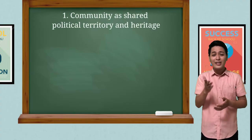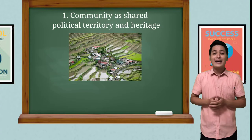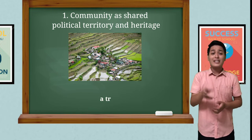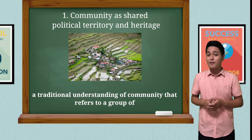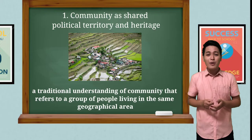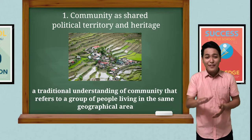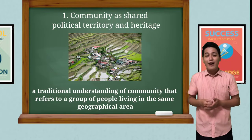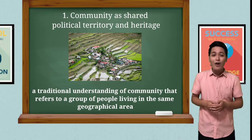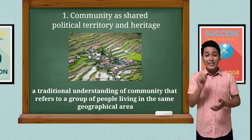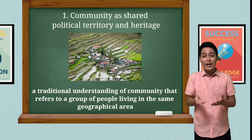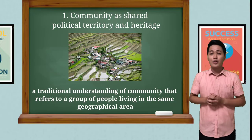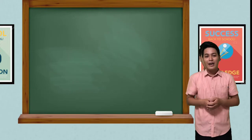Number one: community as shared political territory and heritage. It is a traditional understanding of community that refers to a group of people living in the same geographical area, either as a neighborhood, village, town, or city, where interpersonal ties are locally bounded, are based on a shared government, and a common cultural and historical heritage.